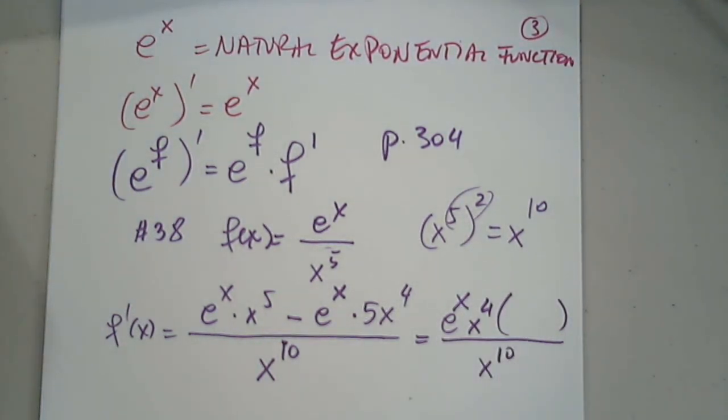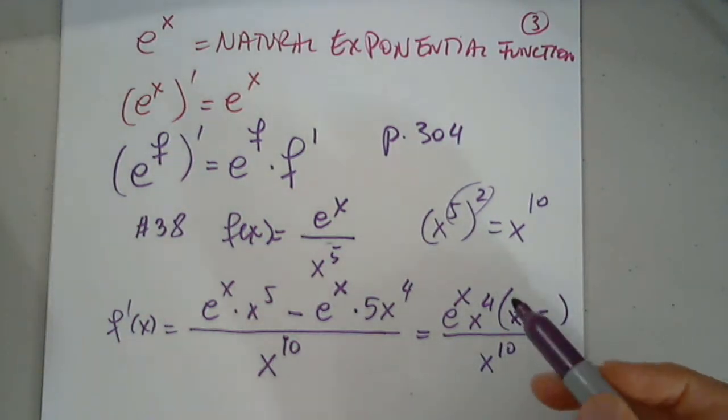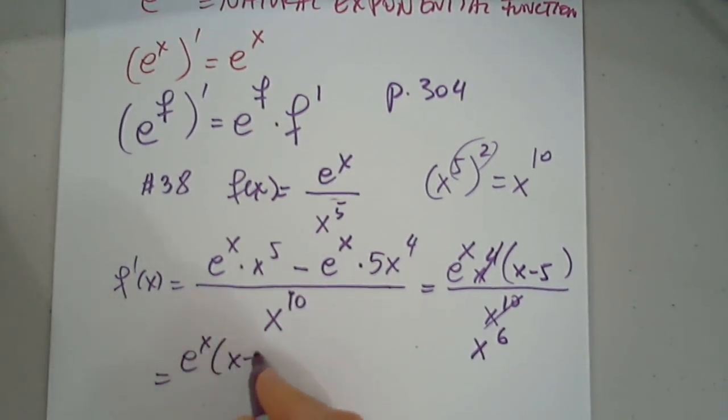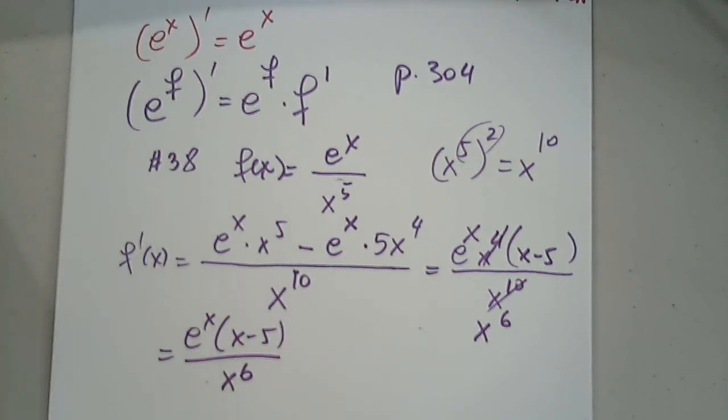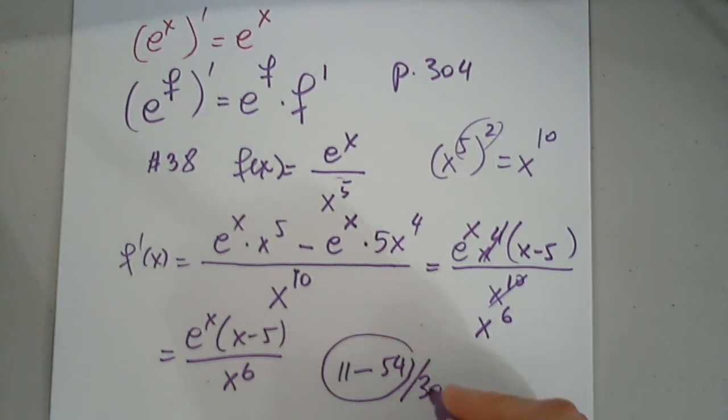Now what is left in parentheses? Anyone else like Alex, Savannah, Gabby, anyone who hasn't said anything yet? x minus five, and then we will simplify and we get e^x times (x-5) divided by x to the sixth. So this is the fully simplified form.